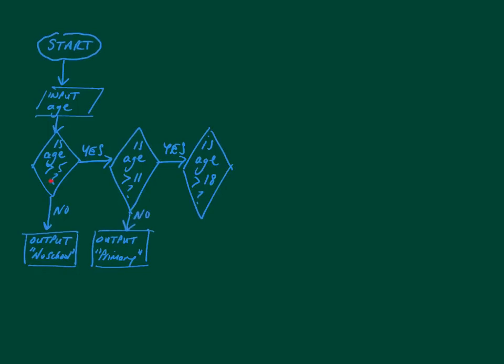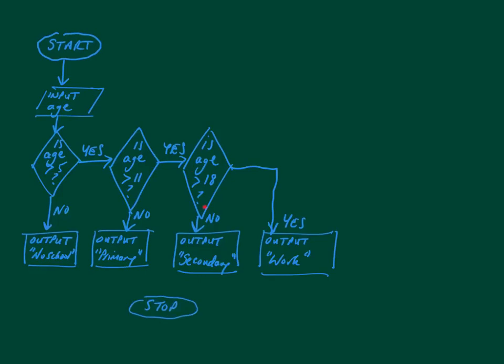If age is not greater than 5, we're just going to output 'No school'. If age is greater than 5 but not greater than 11, we're going to output 'Primary'. If age is greater than 11 but not greater than 18, we're going to output 'Secondary'. And if age is greater than 18, we're just going to output 'Work'. So a nice, simple nested if.